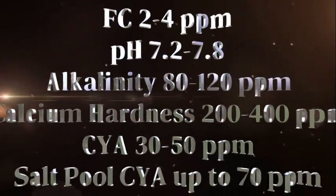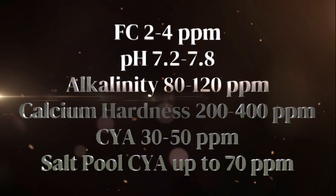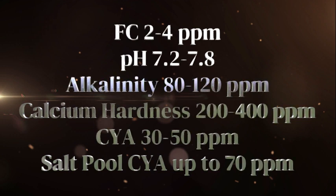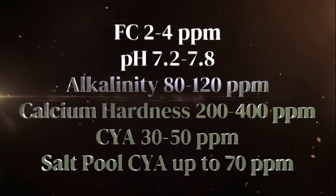We should keep our chemical readings as follows: free chlorine at 2 to 4 parts per million, pH 7.2 to 7.8, total alkalinity between 80 to 120 parts per million, calcium hardness 200 to 400 parts per million, and CYA stabilizer between 30 to 50 parts per million. Salt pools can go up to 70 parts per million.